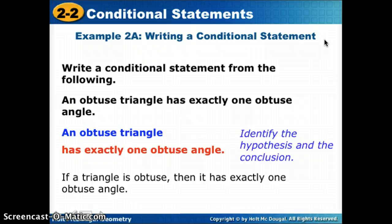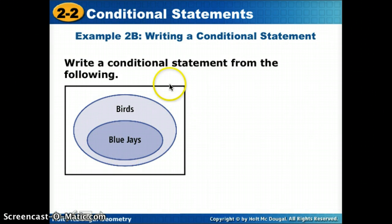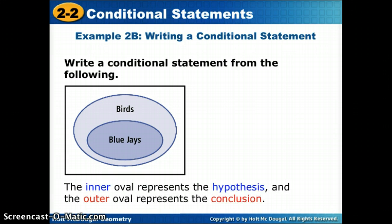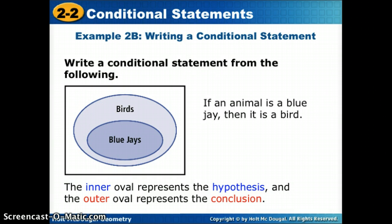We can also look at these in Venn diagrams. The hypothesis is always the smaller inner oval, and the outer oval is always our conclusion. For example, if I wanted to write an if-then statement from a Venn diagram showing blue jays inside birds, I would say: 'If an animal is a blue jay, then it is a bird.'